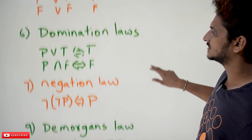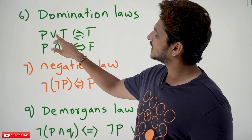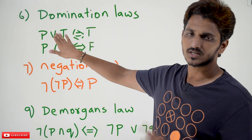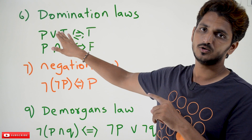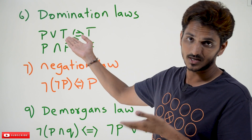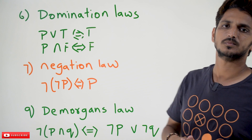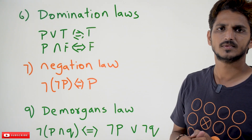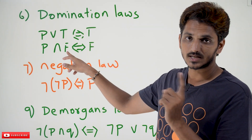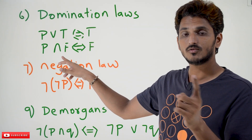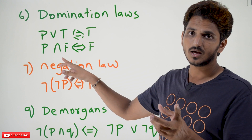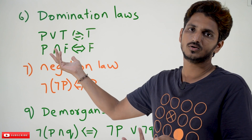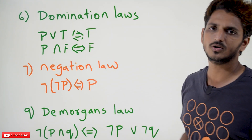The next one is domination laws. P disjunction true is always equal to true — disjunction means any one is true and the output is true, and it is already given that one is true, so our output is true. Similarly, P conjunction false equals false — conjunction means all values must be true for the output to be true, but one is already false, so whatever P is, our output is going to be false.